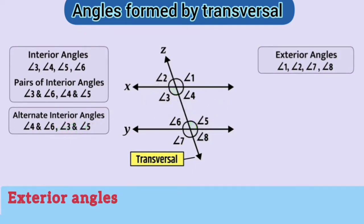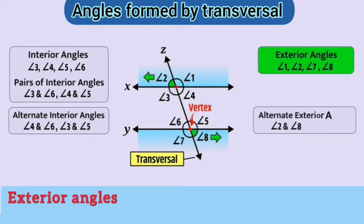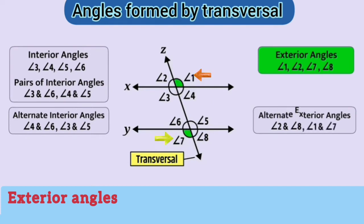Now let us learn about exterior angles. Here, angle 2 and angle 8 have different vertices. Both are present on the outer side of the two lines as well as on opposite sides of the transversal. Such angles are called alternate exterior angles. Here, angle 1 and angle 7 are also a pair of alternate exterior angles.